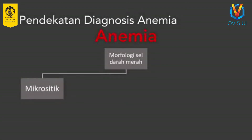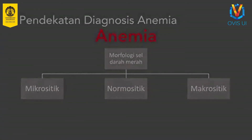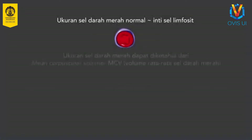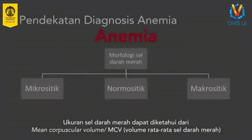Pendekatan diagnosis penyebab anemia yang umum digunakan adalah berdasarkan morfologi sel darah merah. Berdasarkan ukurannya, sel darah merah dapat dibedakan menjadi mikrositik atau berukuran lebih kecil daripada normal, normositik atau normal, dan makrositik jika lebih besar daripada normal. Ukuran sel darah merah dianggap normal jika hampir sama dengan ukuran inti limfosit pada pengamatan dengan mikroskop. Selain dari hasil observasi langsung, ukuran sel darah merah juga dapat diketahui dari mean corpuscular volume atau MCV yang merupakan volume rerata sel darah merah.